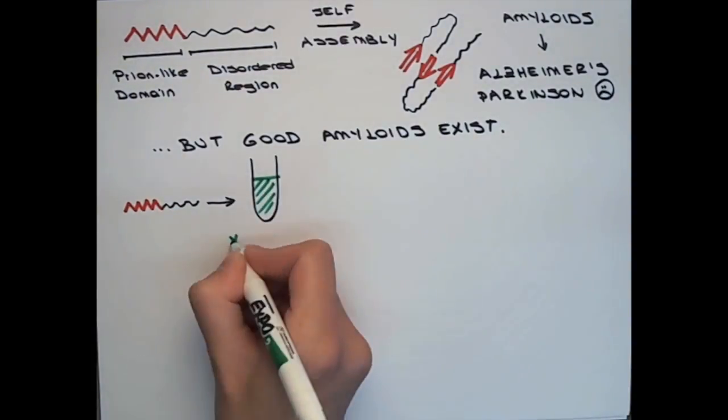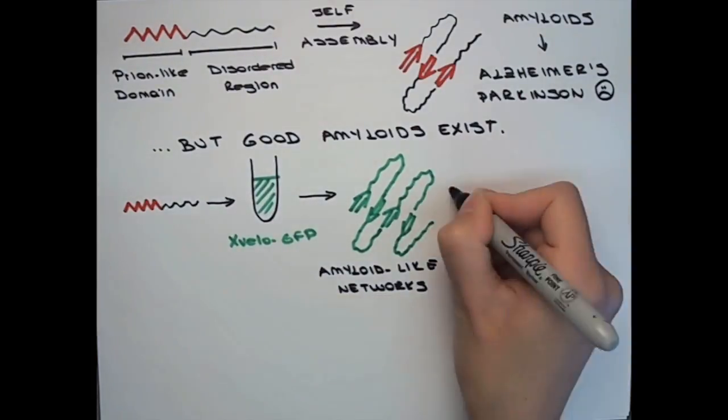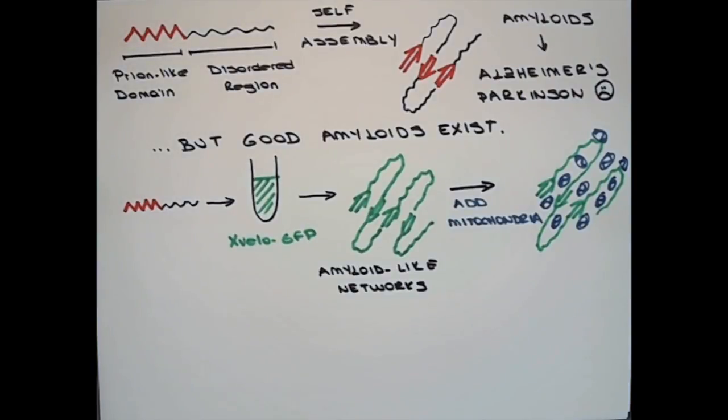We purified Xfelo and found that, in a test tube, it formed large networks with amyloid-like properties. These networks can recruit organelles in cell extracts, just like balbionibodies do in cells.